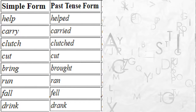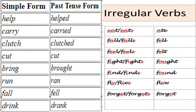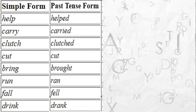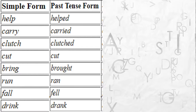Let us look at some more mixed examples of past tense. 'Help' is 'helped,' 'carry' is 'carried,' 'clutch' is 'clutched,' 'cut' is 'cut' — see, it is not changing. 'Bring' has changed altogether to 'brought,' 'run' has changed to 'ran,' 'fall' has changed to 'fell,' and 'drink' has changed to 'drank.' So you can see a mixed bag of past tense forms — some regular, some irregular.